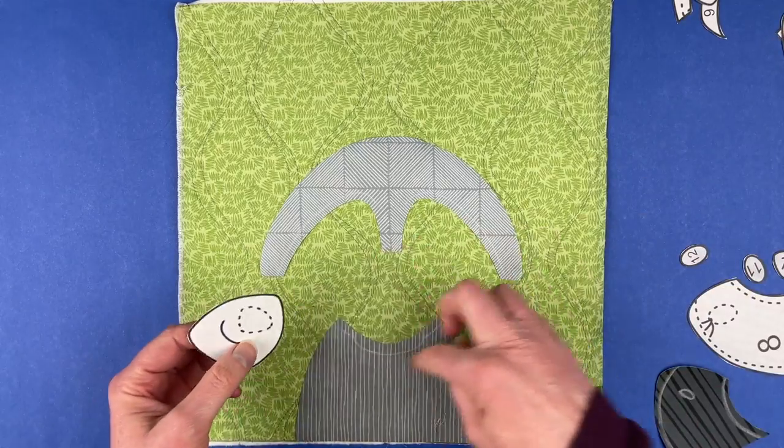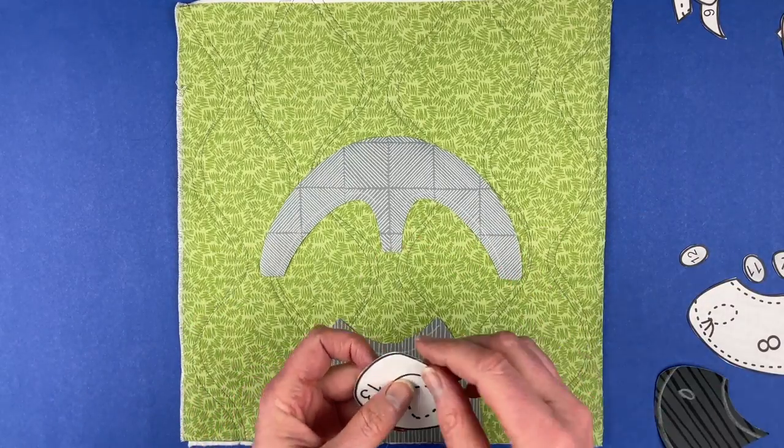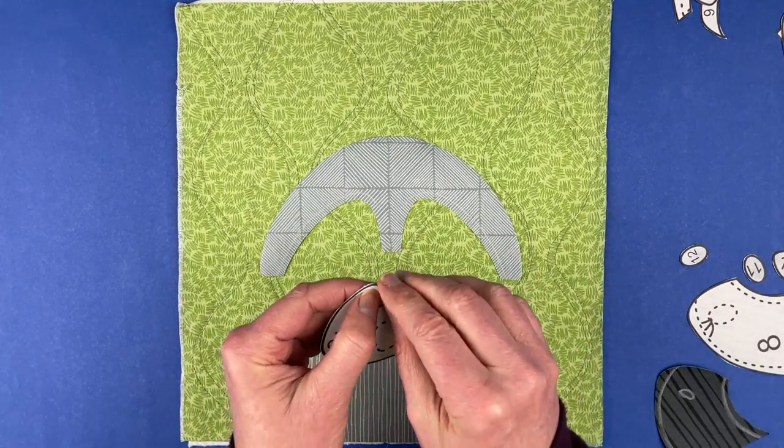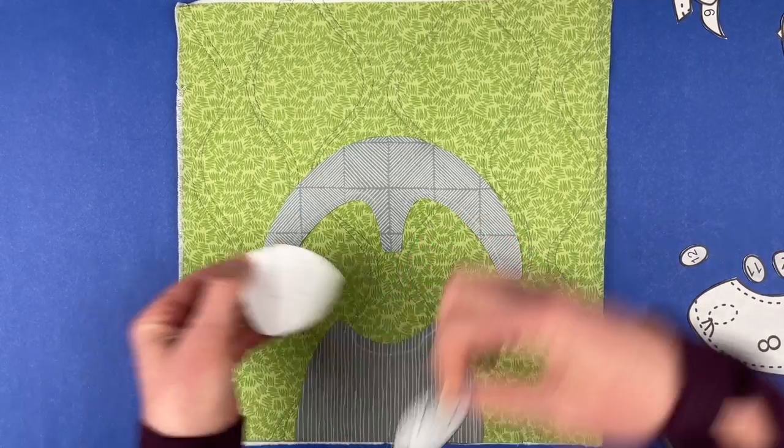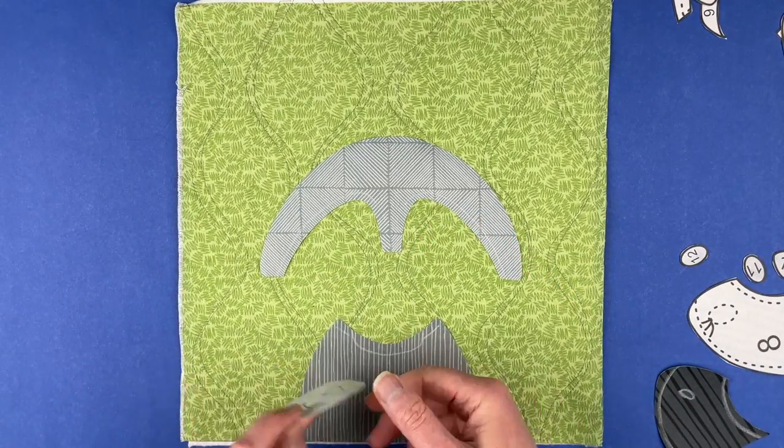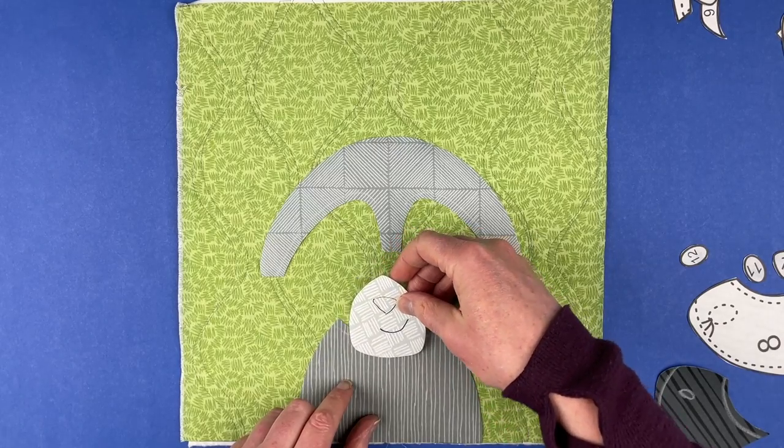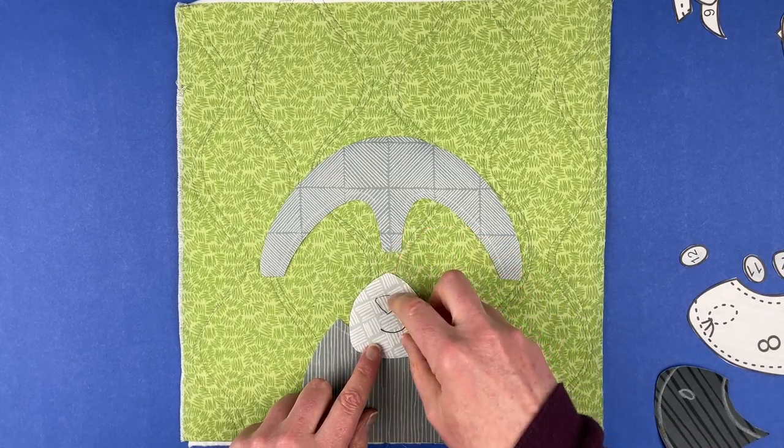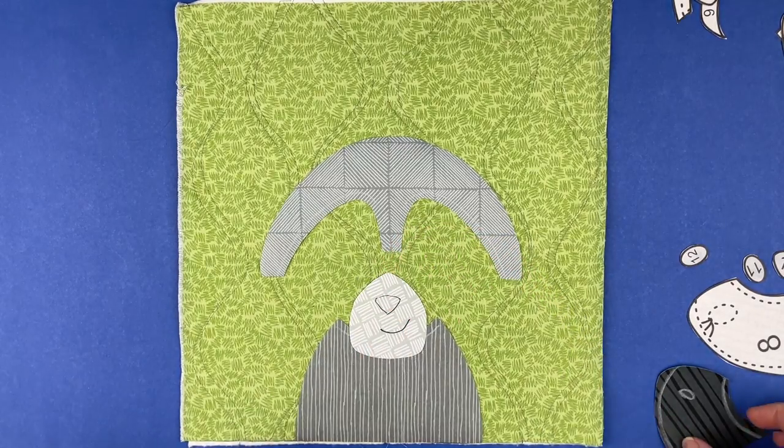So let's go ahead and get the muzzle in. There's a line marked here. As soon as we cover up that line we know we've got good overlap and it's positioned in the right place.